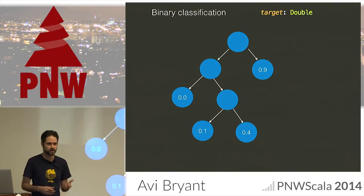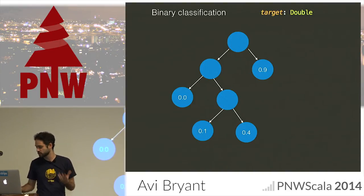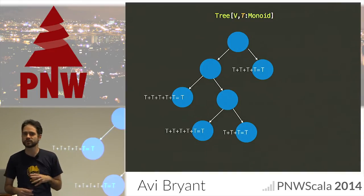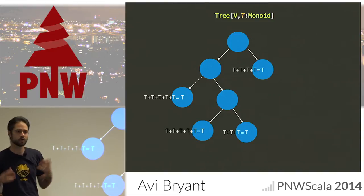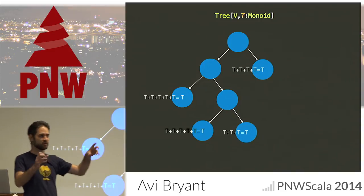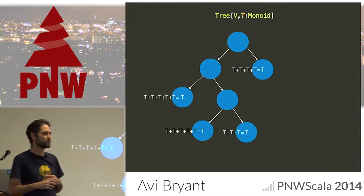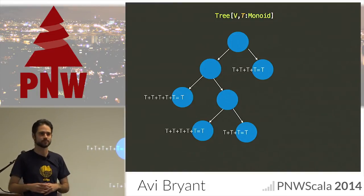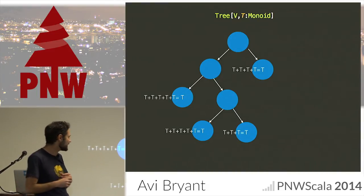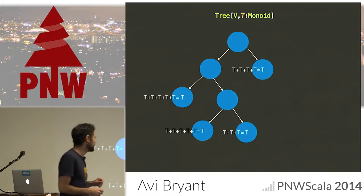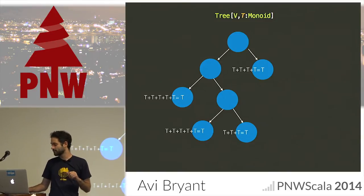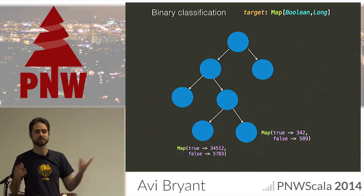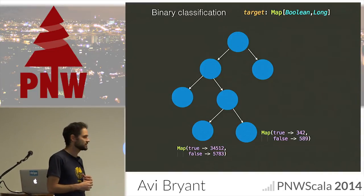But we have an additional design constraint on Brushfire: we want it to operate in a distributed way. That additional design constraint puts an additional type constraint on T — we want our predictions to be something we can sum up, something we can build a small piece of on each of a number of nodes and then combine. We use the Algebird library (ScalaZ also has this type class) — there's a monoid type class, which just means something that can be summed: it's commutative, has a zero, has a plus operation. So our T needs to be a monoid. In the case of a binary classifier, we can just use a map with a count for trues and a count for falses — that will give us probabilities because we can look at the ratio.